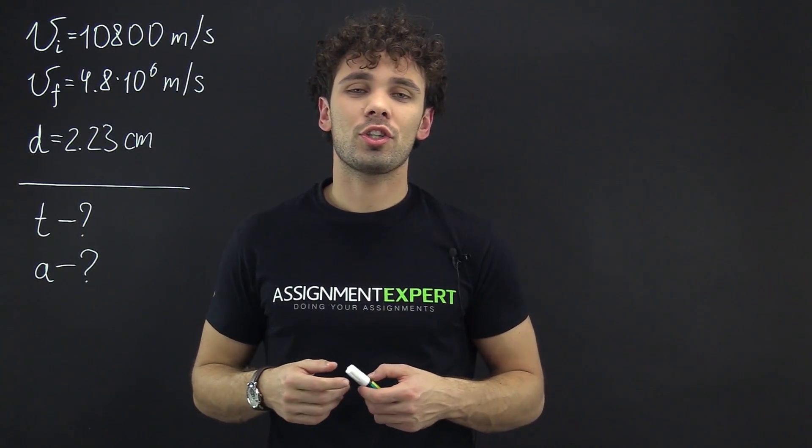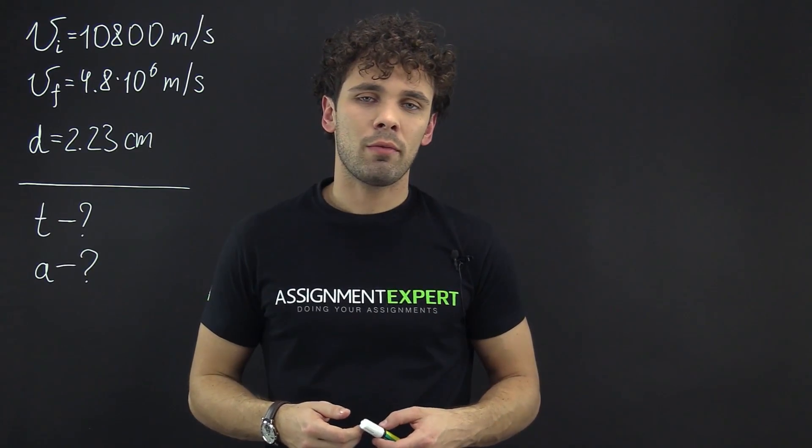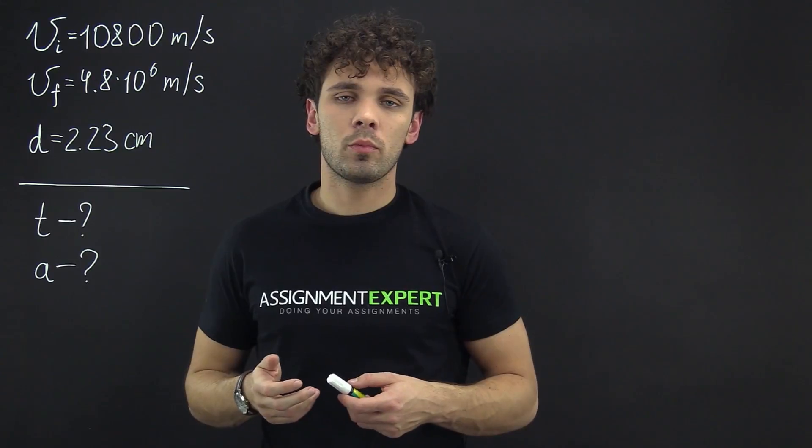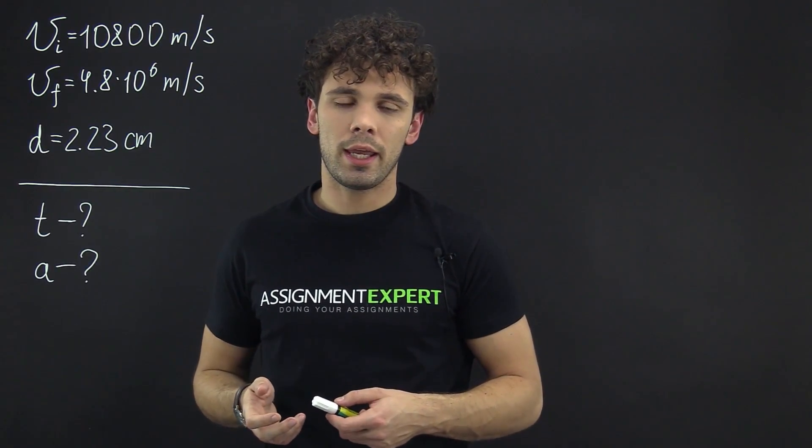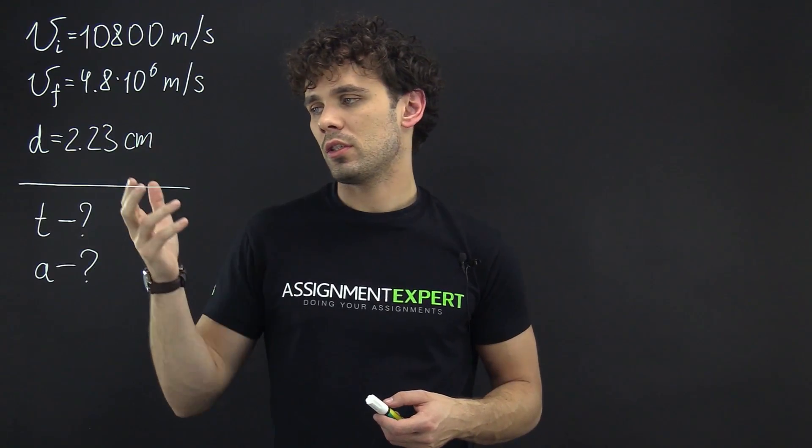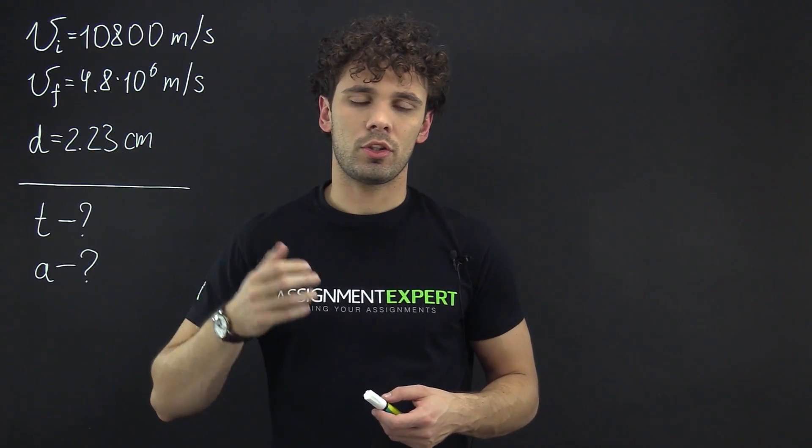Hi guys! You are watching Assignment Expert and today we prepared the following task for you. We have an electron that moves in a cathode ray tube and it accelerates from one speed to the other over the distance 2.23 centimeters.